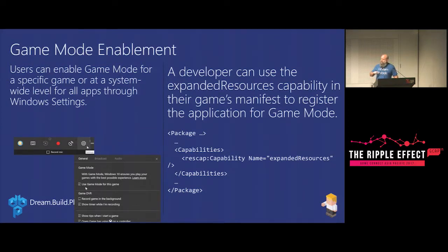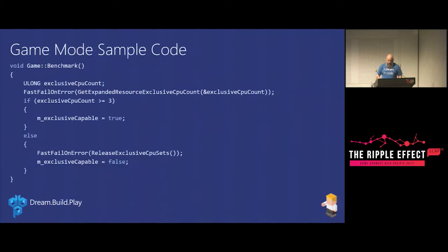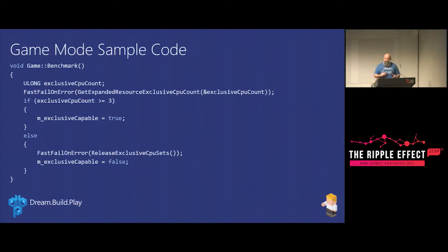The cool stuff is when you set it yourself in the app manifest to say your game needs access to expanded resources. You're telling the operating system and store that you need your game resources. Then you can interrogate it via APIs and act accordingly. In this sample code, I'm basically asking how many exclusive cores I've got — it gives me two bits of information: am I in Game Mode and getting exclusive cores, and how many cores am I getting? So in this example, if I have three or more cores dedicated to my game, I'll do some extra fancy graphics processing. If I don't have that many cores, I'll drop down and maybe not do the anti-aliasing. It gives you the ability to do really cool stuff without chugging on lower spec machines.